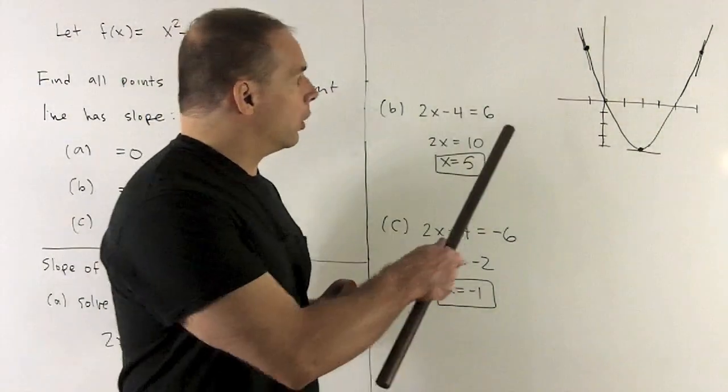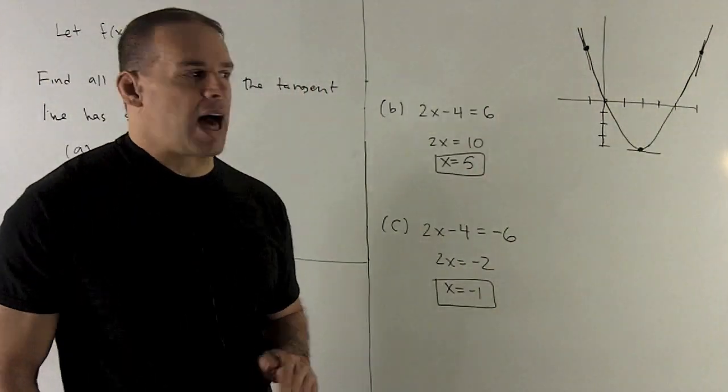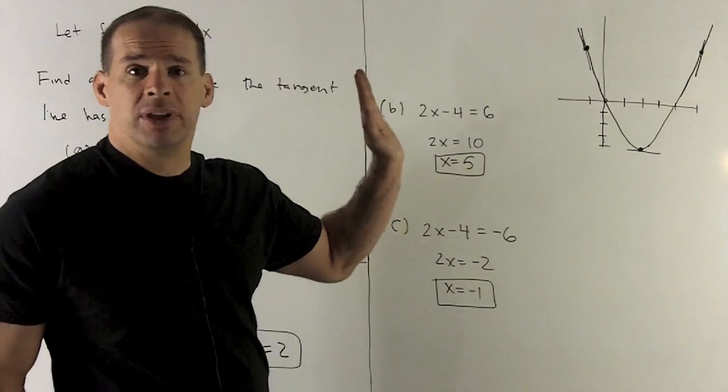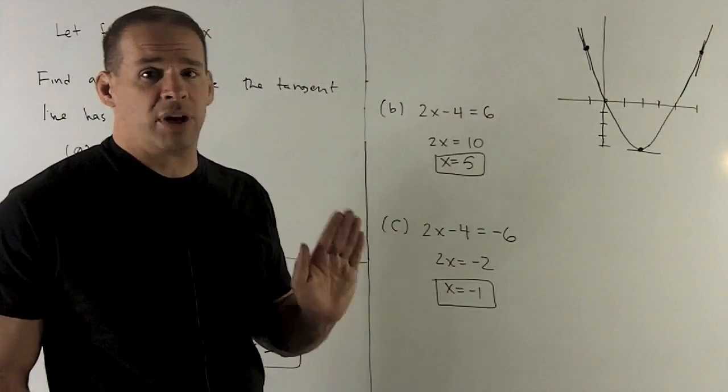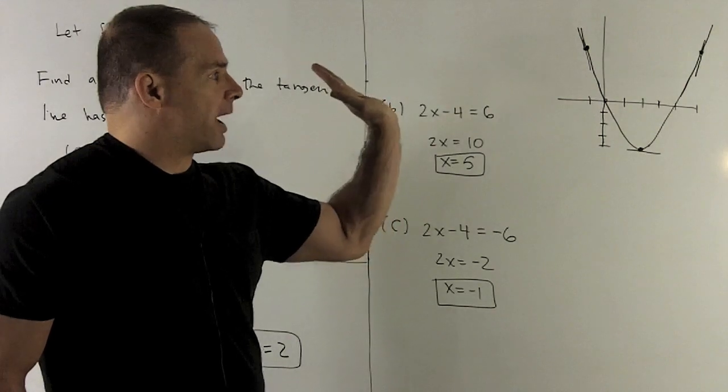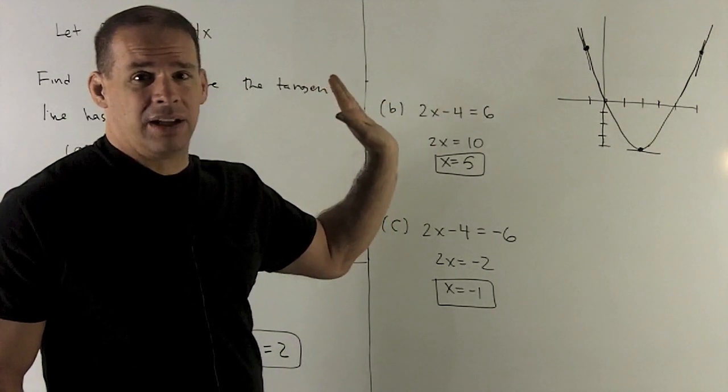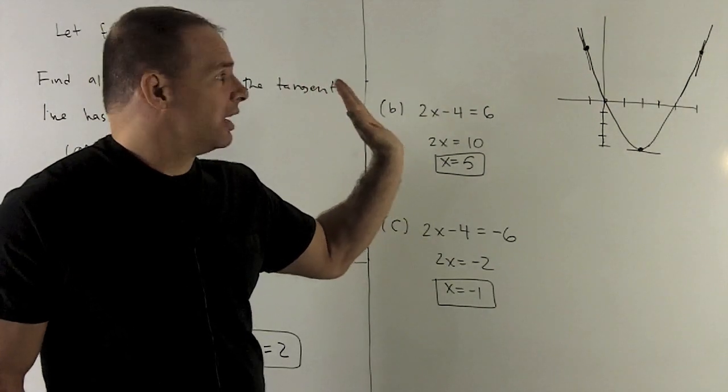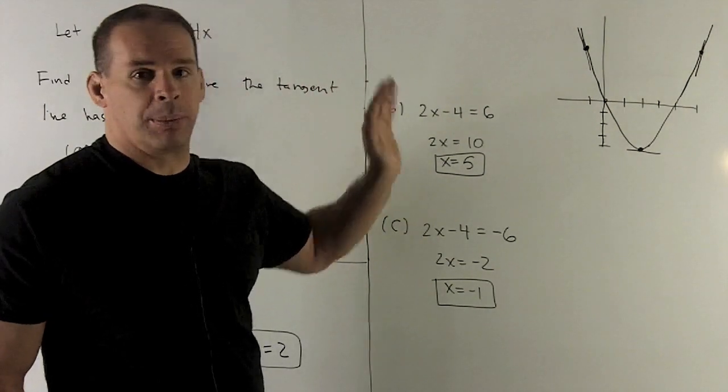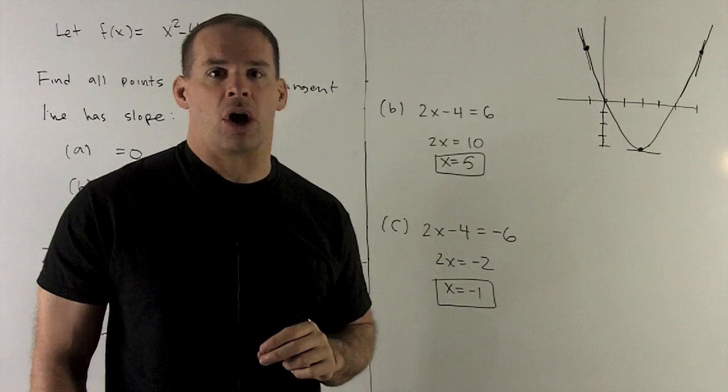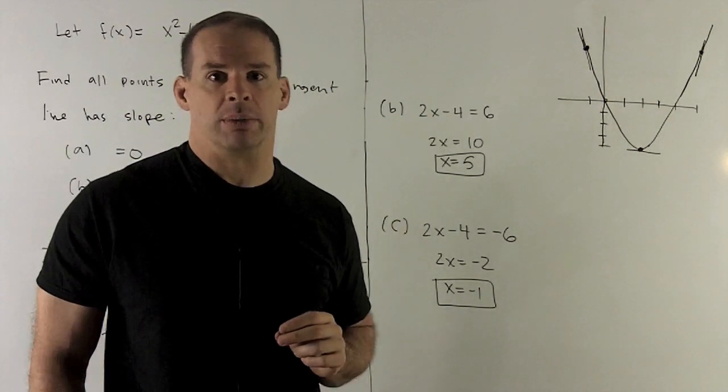At -1, we note we have a steep line, but it's going in this direction, so it has negative slope. By the same reasoning as before, if I'm at a 45-degree angle going in the other direction, we're looking at slope = -1. As I get steeper and steeper, its absolute value gets larger, so -6 is reasonable here.